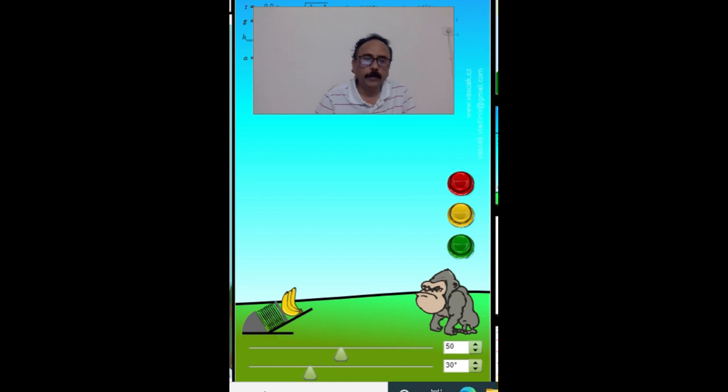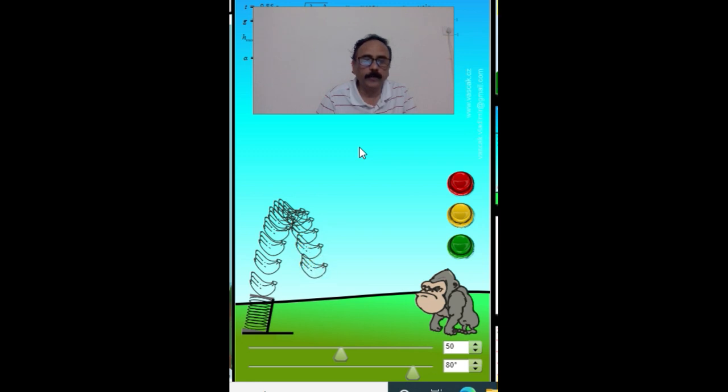Now in the projectile motion, let us observe the beautiful animation from physics animation's site. Here, this banana is undergoing the influence of gravitational force of attraction. So if you look at the path of this banana, it is a projectile.